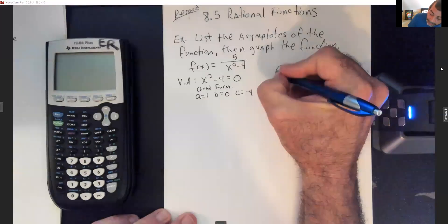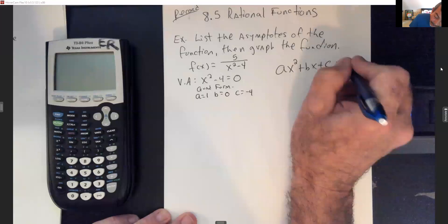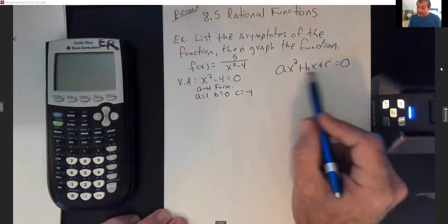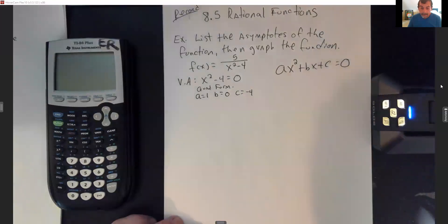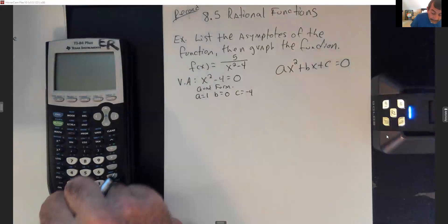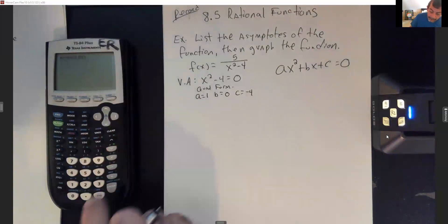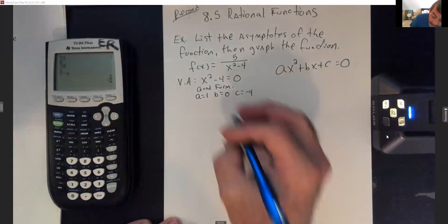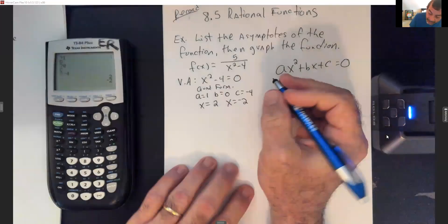Remember, your quadratics are always in the form ax² + bx + c = 0, so whichever term is missing out of your polynomial is the one that's going to be 0. Using the quad program — enter, enter — I put in a 1, 0, and a negative 4. I get x equals 2 and x equals negative 2. Those two answers would be my vertical asymptotes.